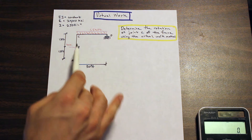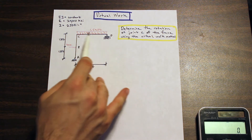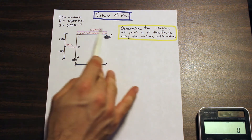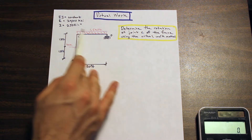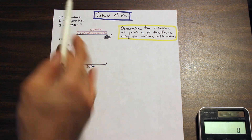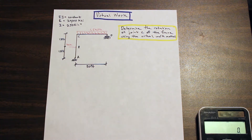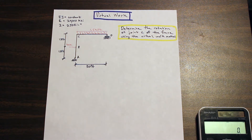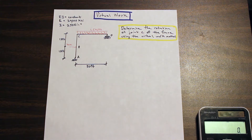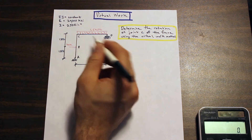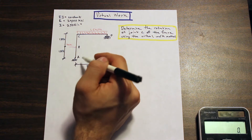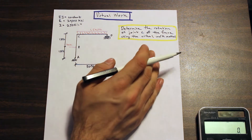We're given a frame here, ABCD. We have a 1.5 kip per foot uniform distributed load, a point load of 40 kip, a pin and a roller, and we're told that EI is constant. Virtual work is a method used to determine either the deflection or the rotation at a point in a frame, beam, or truss. So we're working with a frame, and now we can count the number of reactions to determine whether the virtual work method applies.